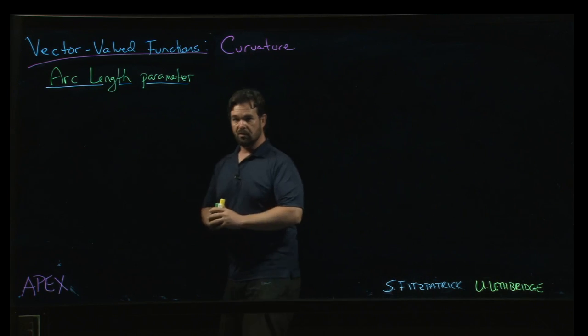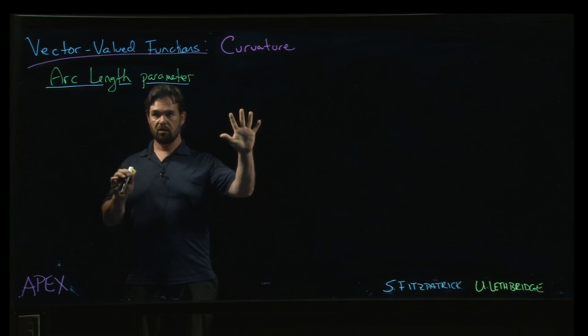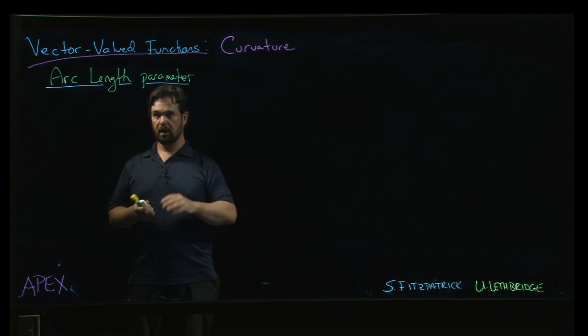So this is the last section in the chapter on vector-valued functions. It's mostly on curvature, but we begin with this discussion of what's known as the arc length parameter.